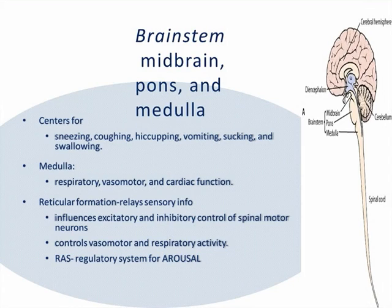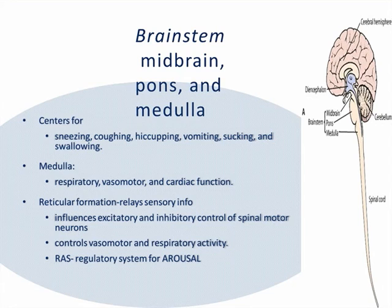The brain stem includes the midbrain, the pons, and the medulla. These are the vital centers concerned with respiratory, vasomotor, and cardiac function, particularly in the medulla. The brain stem itself contains the centers for sneezing, coughing, hiccuping, vomiting, sucking, and swallowing — which becomes critically important when caring for a comatose patient or an infant. The reticular formation relays sensory information and is responsible for excitatory and inhibitory control of spinal motor neurons, controlling vasomotor and respiratory activity. The reticular activating system (RAS) regulates arousal, which is important when assessing a patient's level of consciousness.